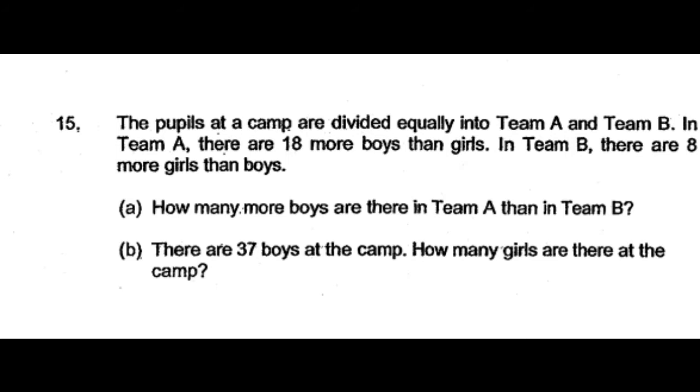The pupils at a camp are divided equally into Team A and Team B. In Team A, there are 18 more boys than girls. In Team B, there are 8 more girls than boys.